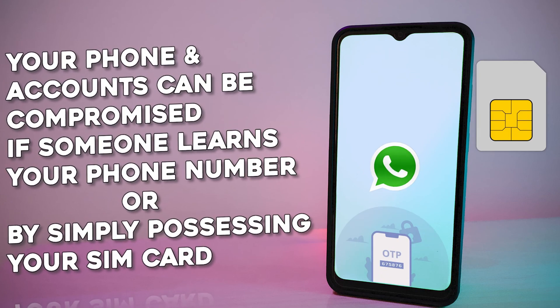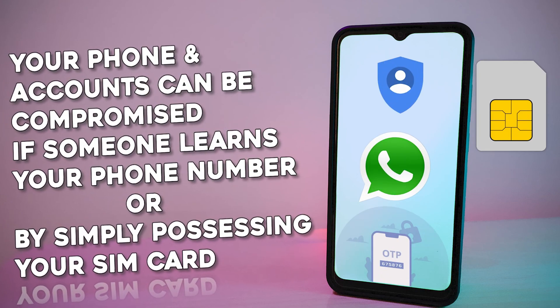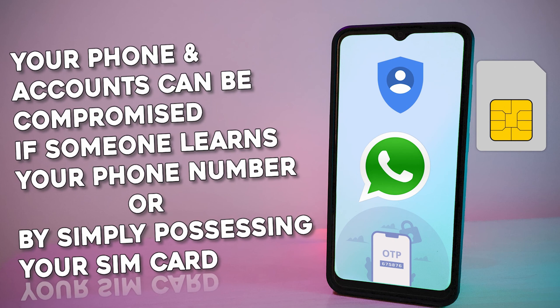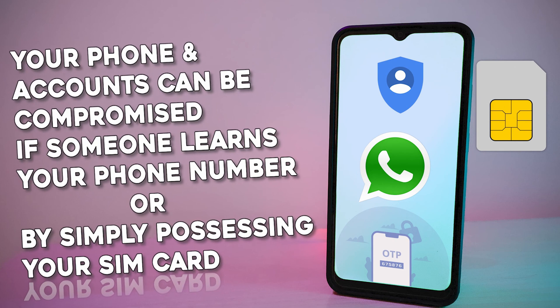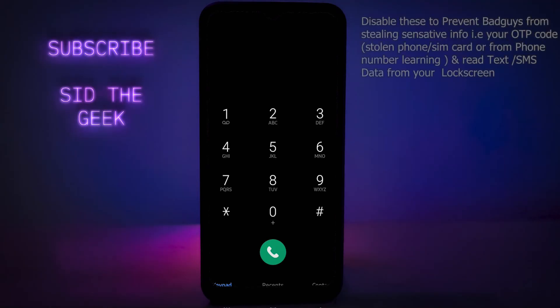When bad guys steal your phone including the SIM card, or somehow learn about your phone number, your phone data is always safe — considering that you have set up security on the lock screen. But they can still steal your accounts like WhatsApp, Google, and so on. That's why we first need to prevent attackers from reading your OTP code, which solely relies on your phone number.